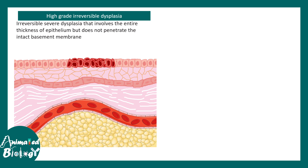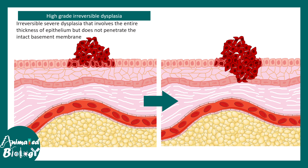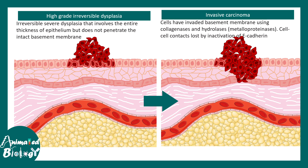In the case of high grade irreversible dysplasia, the thickness of the epithelium is increased, but it has still not penetrated the basement membrane. Even in irreversible dysplasia, the basement membrane remains intact. Eventually this grows into carcinoma. In invasive carcinoma, the basement membrane is overall compromised and the cells have penetrated through it.